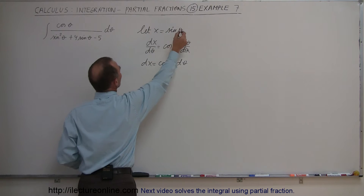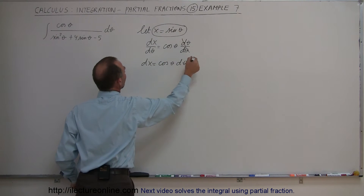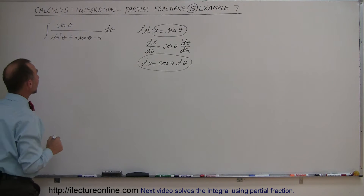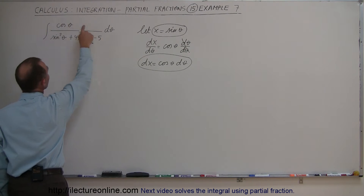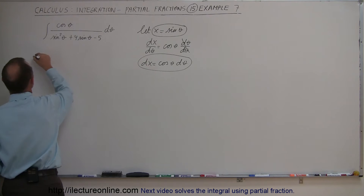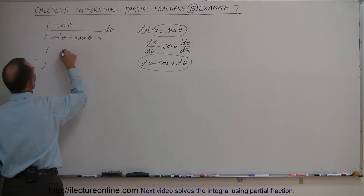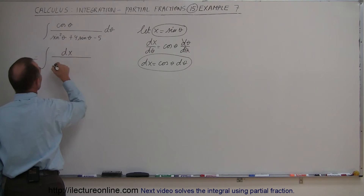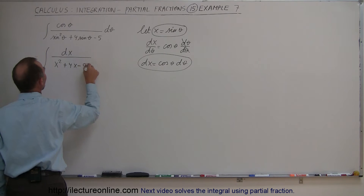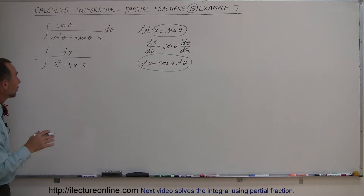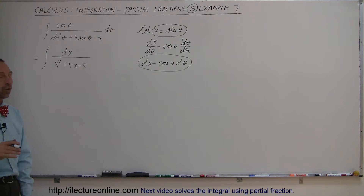If we now substitute x equals sine of theta and dx equals cosine of theta dθ into the integral, the cosine of theta dθ becomes dx, and we end up with the integral of dx divided by x squared plus 4x minus 5 — an integral we can solve with the partial fraction technique.